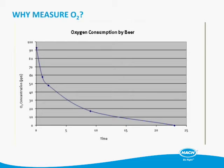If you look at this graph, what you see is a decay over time. Note that there aren't any units on the x-axis — time could be minutes, it could be hours, it could be days. It's probably not going to be seconds or weeks. Flavor changes won't show up probably for another two to three months, unless it's heavily oxidized, in which case they could show up after 30 to 45 days.